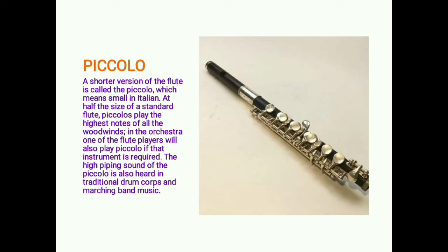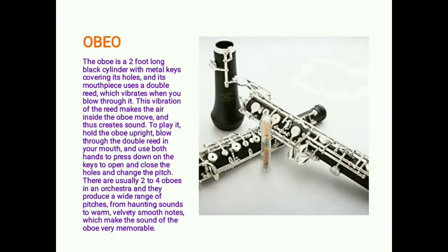The piccolo is a shorter version of the flute — the word means 'small' in Italian. At half the size of a standard flute, the piccolo plays the highest notes of all the woodwinds in the orchestra. One of the flute players will also play piccolo if that instrument is required. The high, peeping sound of the piccolo is also heard in traditional drum corps and marching band music.